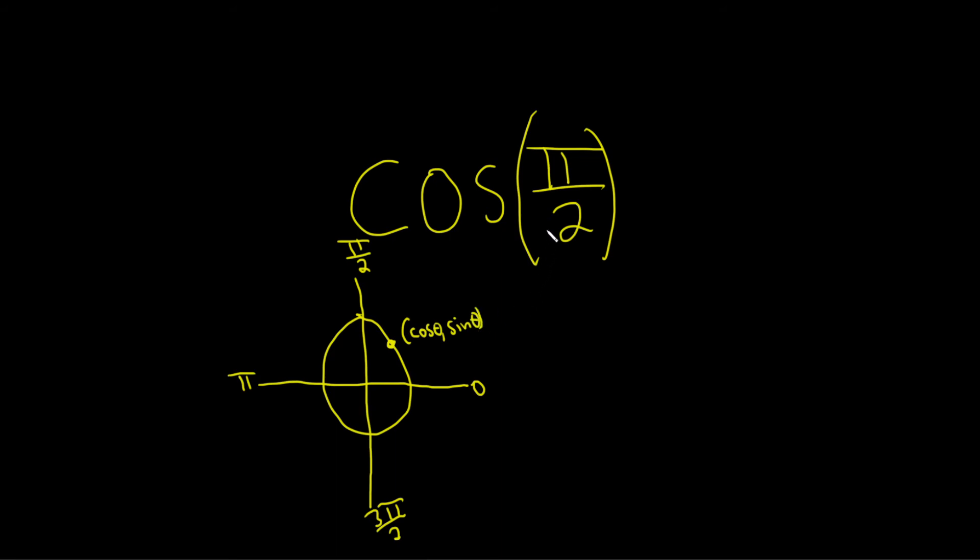We're interested in the cosine of pi over 2. So this point here is the one we care about. This is the unit circle, that means it's a circle with radius 1. So as an ordered pair, the x-coordinate here is 0 and the y-coordinate is 1.